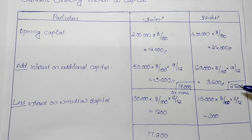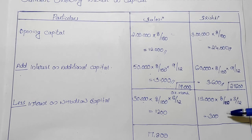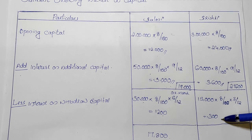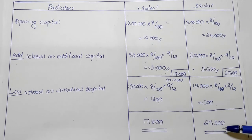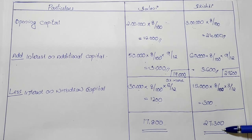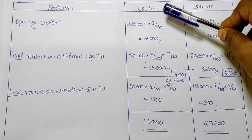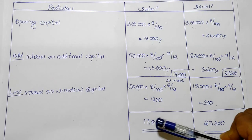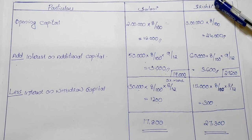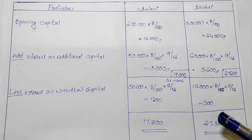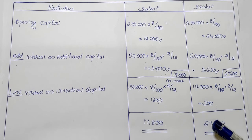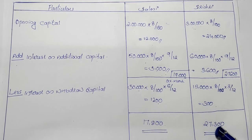So we are deducted by the amount of $27,300. Saloni's interest is $17,000 and $23,000.